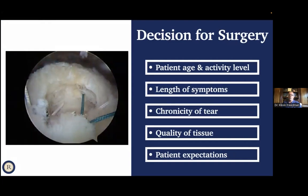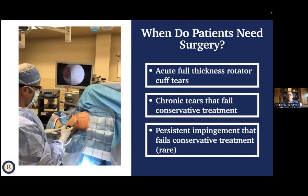When do I do surgery? Decisions for rotator cuff surgery consider age and activity level, how long someone has had symptoms, and chronicity of the tear. An acute tear is much more likely to be fixed than a chronic tear. Tissue quality and patient expectations also matter. Acute full thickness tears I nearly always treat with surgery. A chronic tear that doesn't improve with conservative treatment, or persistent impingement that fails conservative care, may go to surgery — though the latter is rare in my practice.